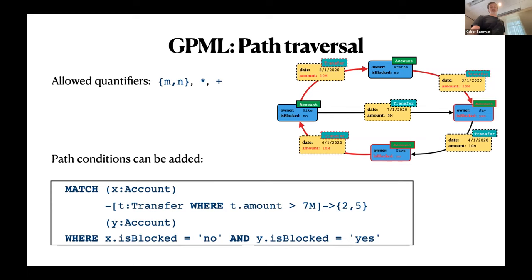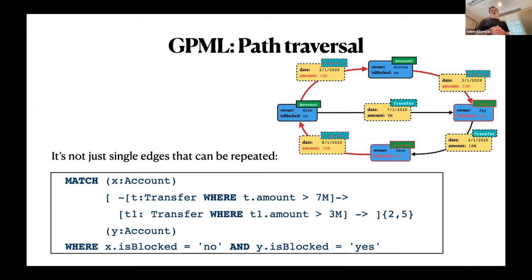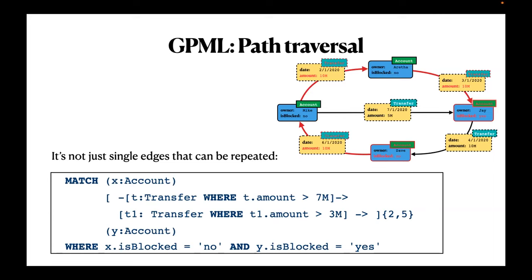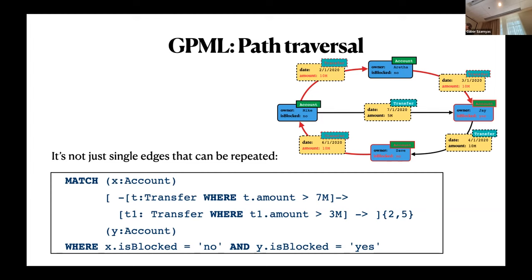It's not just a single edge that can be repeated. This came up several times at the SIGMOD poster session, so I edited the slide: you can repeat an arbitrary pattern. For example, look at a path that starts with an edge with amount greater than seven million followed by an edge with amount greater than three million, and repeat that double-hop pattern between two and five times. The key point is that whatever is in those brackets — which is a pattern, not just a single edge — you can put repetition quantifiers on the whole pattern.